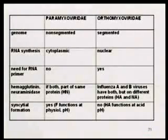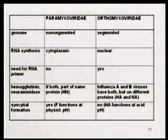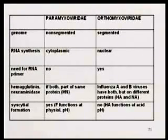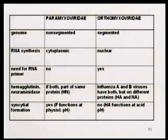In terms of hemagglutinin and neuraminidase: paramyxoviruses, if they have both functions, have them as part of the same protein, whereas orthomyxoviruses have both functions but on different proteins. In terms of syncytia formation, the paramyxovirus fusion protein functions at physiological pH, so they cause syncytia.